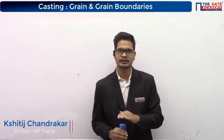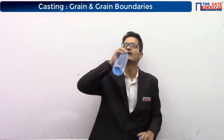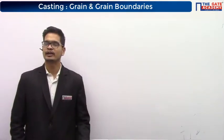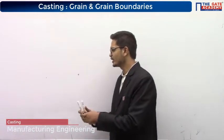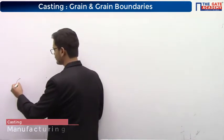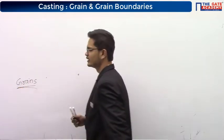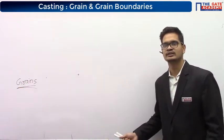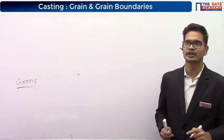Sometimes when you look at the surface of a metal, you can see certain patterns on that metal. Those patterns are nothing but grains. If you are a mechanical engineer, you might have heard the name grains in material science — grains and grain boundaries. Sometimes when you see the surface of a metal, you may see some patterns on it. Those patterns are called as grains.